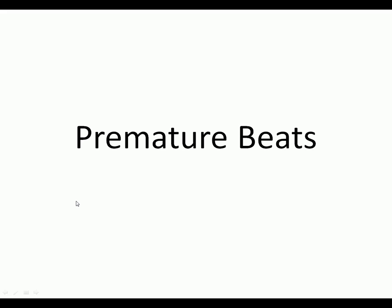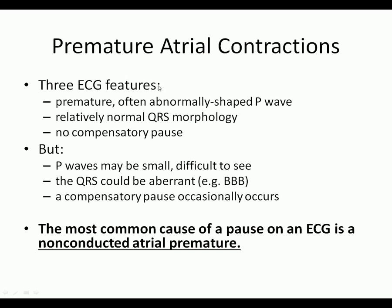Let's start talking about premature beats, beginning with premature atrial contractions, which are considered a superventricular premature beat because they come from above the ventricles. There are three main ECG features: you have a premature, often abnormally shaped P wave — remember the P wave is when the atria contract. You also have a relatively normal QRS, because when the P wave fires early, it still uses the His-Purkinje system, so the QRS complex is not widened.